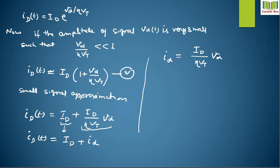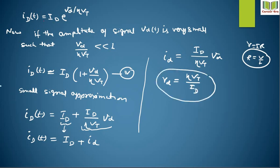Here we identify the term Rd. Since V = I·R, we have R = V / I. Therefore Rd equals η·Vt / ID. This is known as the diode small signal resistance.